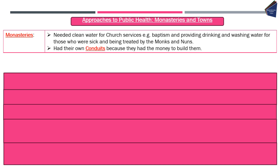The last section covers approaches to public health in monasteries and in towns. Monasteries — religious houses filled with monks — needed access to clean water for church services such as baptism, and for providing drinking and washing water for the sick, as they often had areas similar to hospitals. Monasteries were so wealthy that they built their own conduits — lead pipes bringing spring water from the countryside. Monasteries have been referenced specifically in past exam questions, so you need to know why they needed fresh water and how they got it.